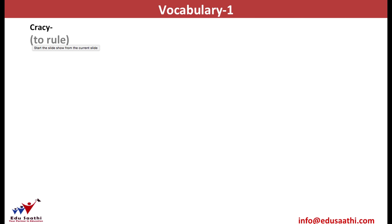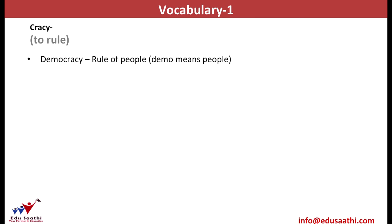Now we discuss '-cracy,' which means to rule. Democracy is the rule of the people. The basic definition of democracy says it is the government of the people, by the people, and for the people. We say so because 'demo' stands for people and '-cracy' is the rule. So the rule of people is known as democracy.